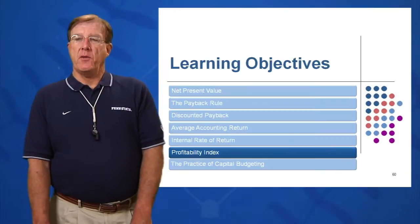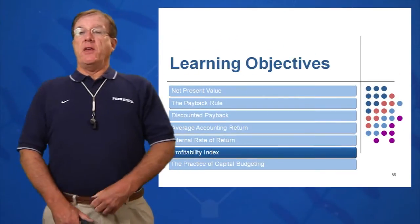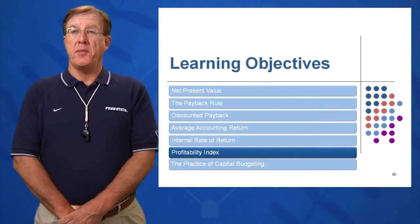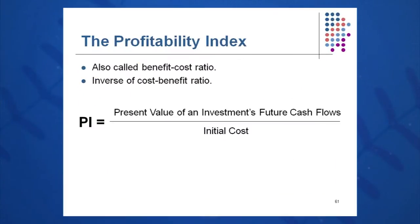The sixth topic, our sixth learning objective, is the profitability index. This is similar to the NPV and is also called the benefit-to-cost ratio. You're familiar in economics with the cost-benefit ratio — here we're going to invert that and make it the benefit-to-cost ratio.